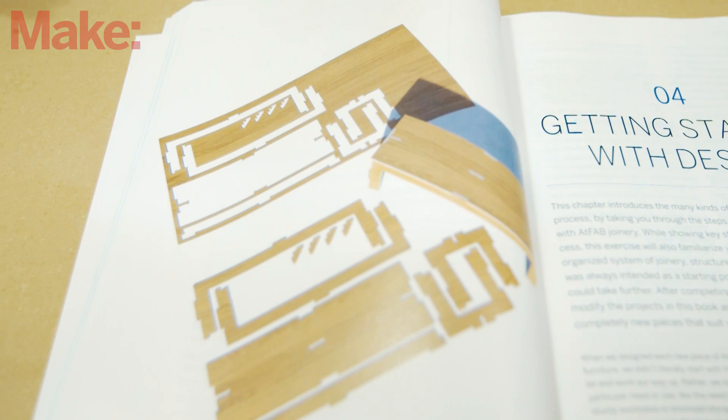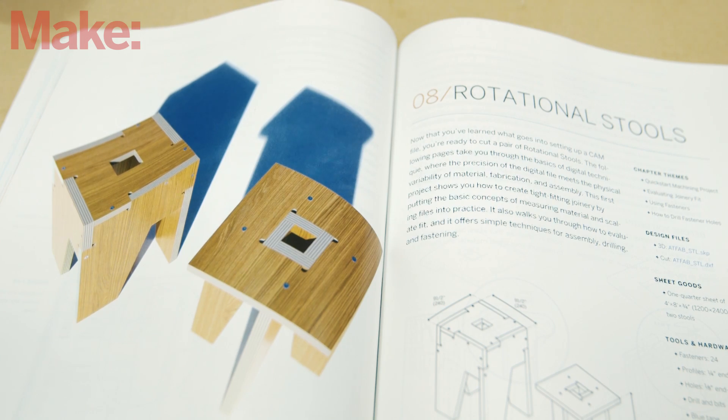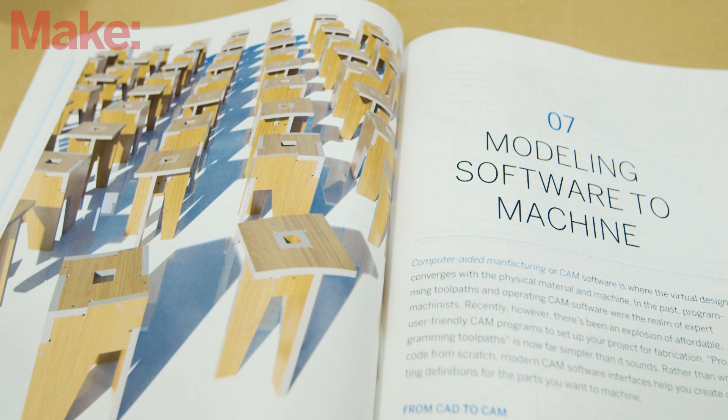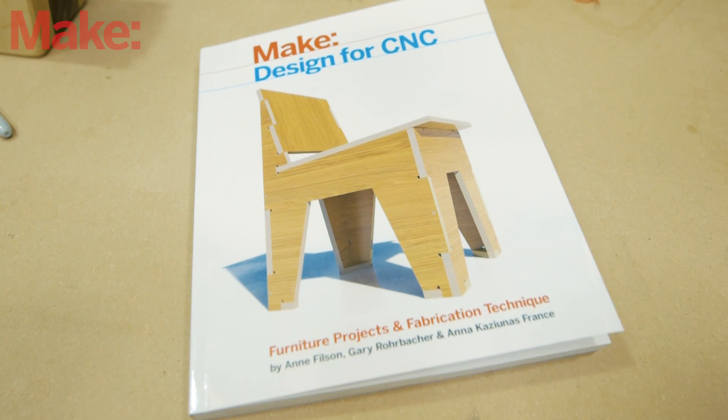All of these joints come from the book Designing for CNC by Ann Filson, Gary Rohrabacher, and Anna Kazunias France. Check out the link below to purchase it. It's filled with loads of designs for CNC and ideas for really complex joinery.